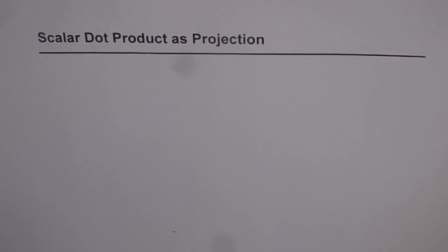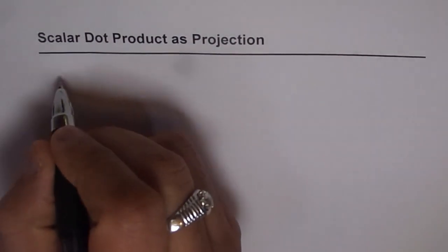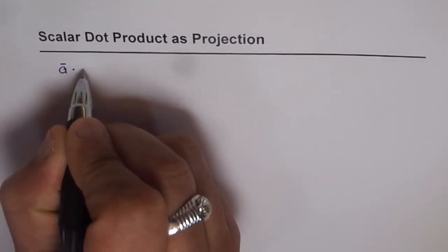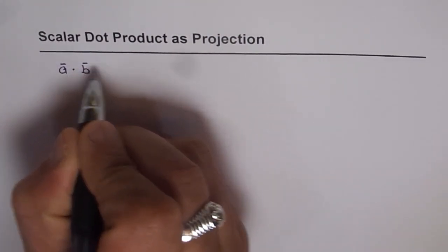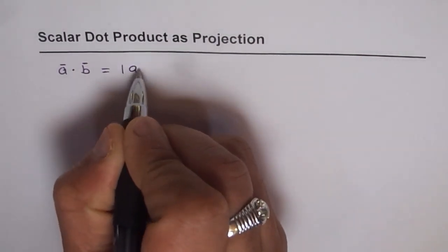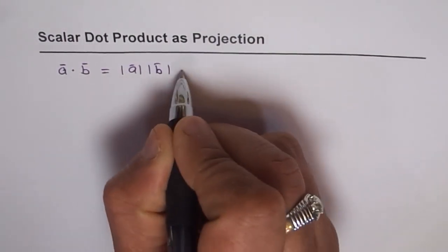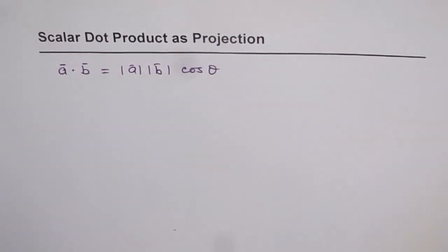Scalar dot product as projection. We will try to correlate dot product with projection. As we know, if we have two vectors A and B, then A dot B is actually equal to the magnitude of A times the magnitude of B times cos of theta. So that is A dot B.